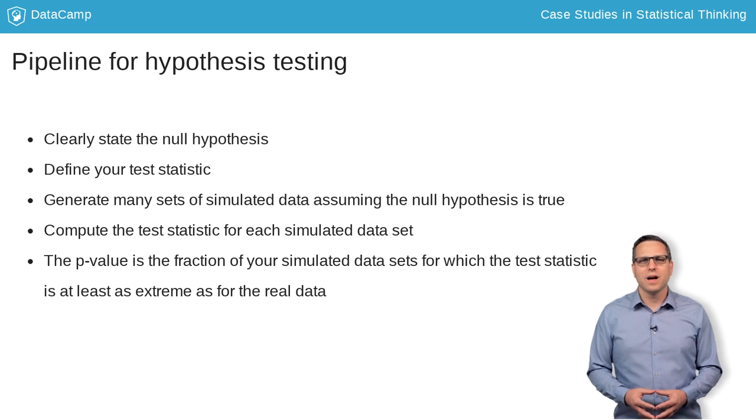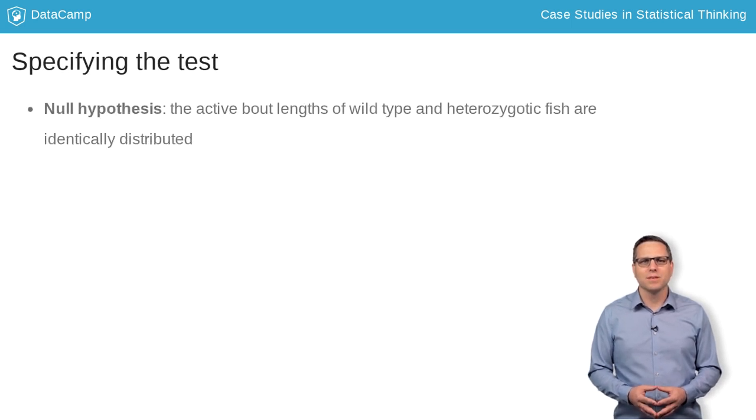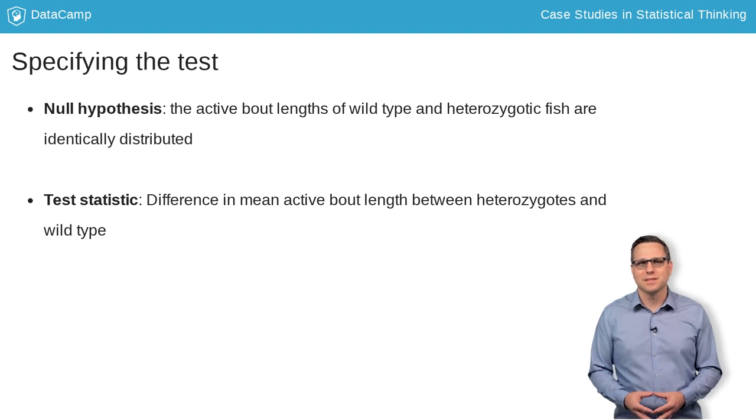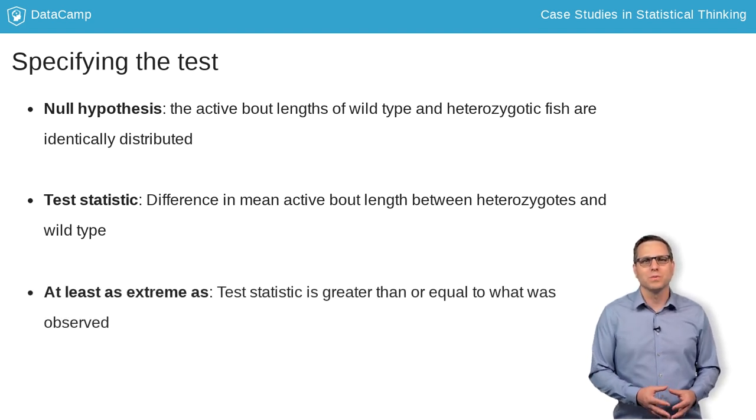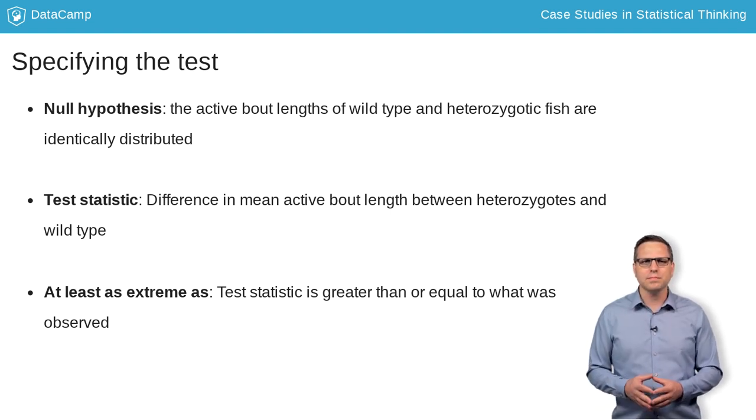Let's consider now the hypothesis that the active bout lengths of wild type and heterozygotic fish are identically distributed. We will use the difference in means of the active bout lengths as a test statistic and consider test statistics greater than or equal to what was observed to be at least as extreme as.